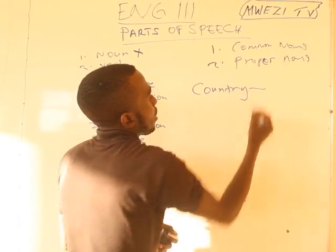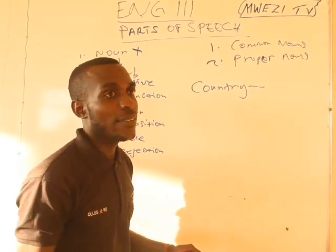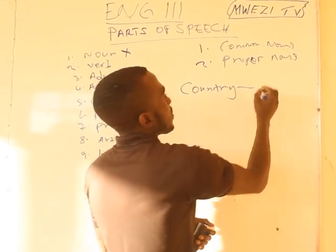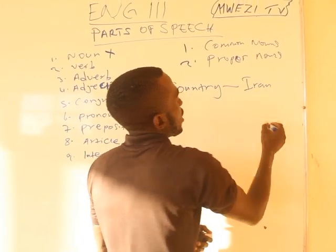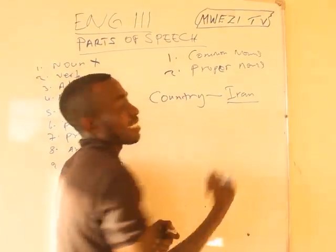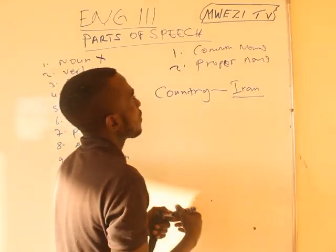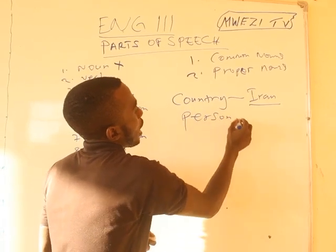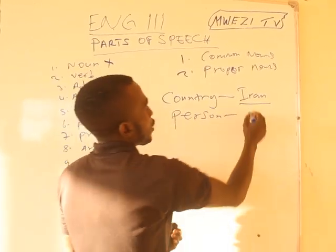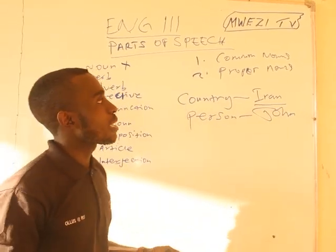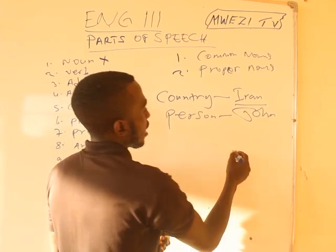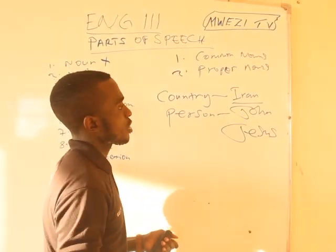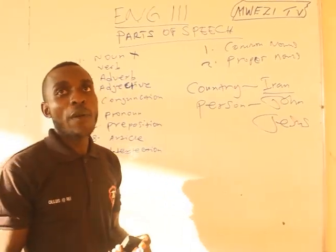So 'Iran' is the proper noun. From the common noun 'person,' which is too general, I would specify to 'John.' Other proper nouns include words like 'Jesus' — that's a proper noun. Even your name, whether you are James, Shira, or whatever, all those are proper nouns.